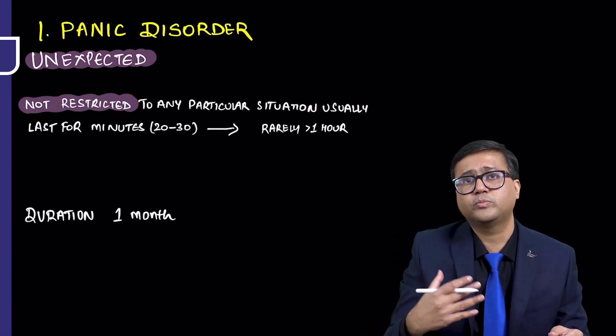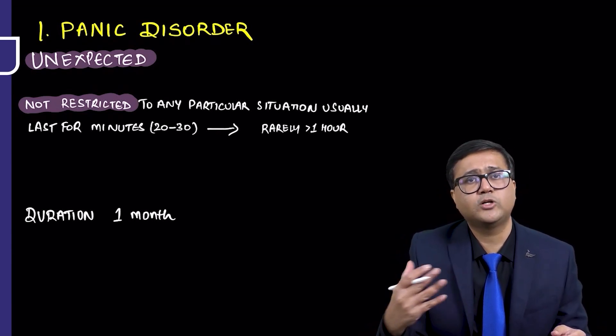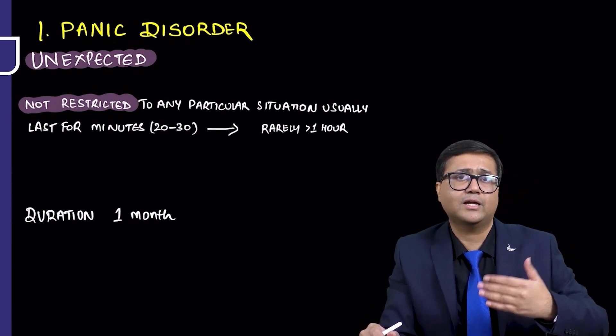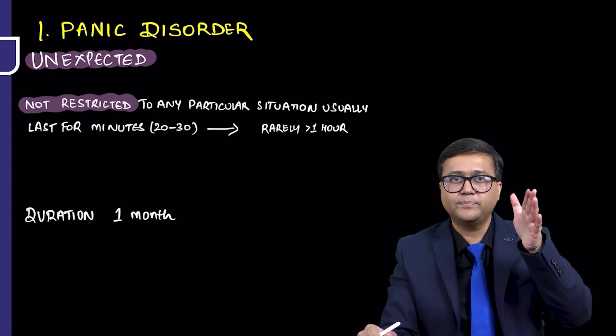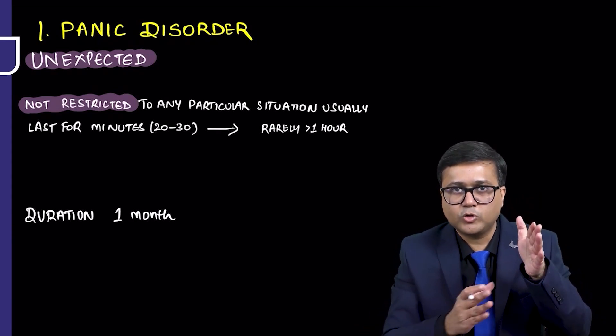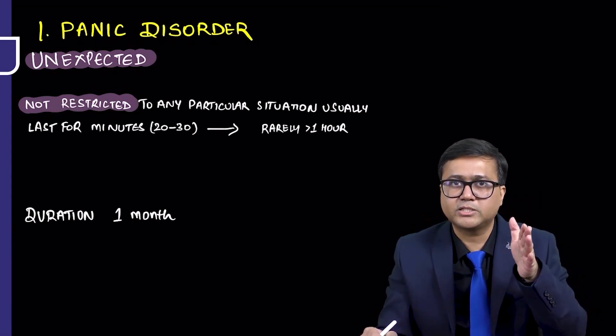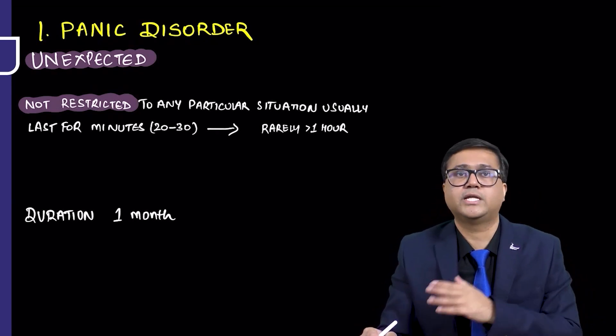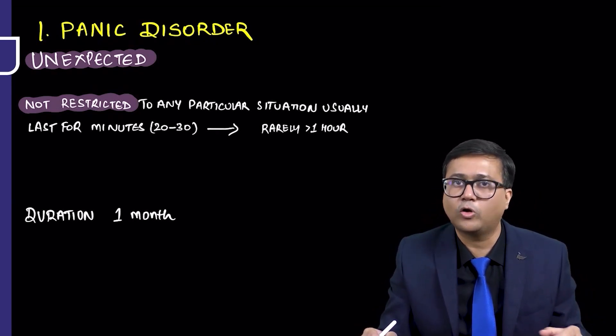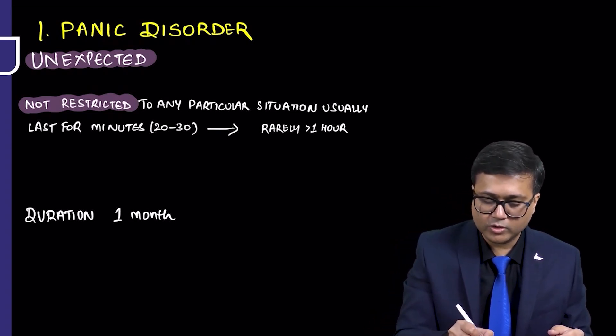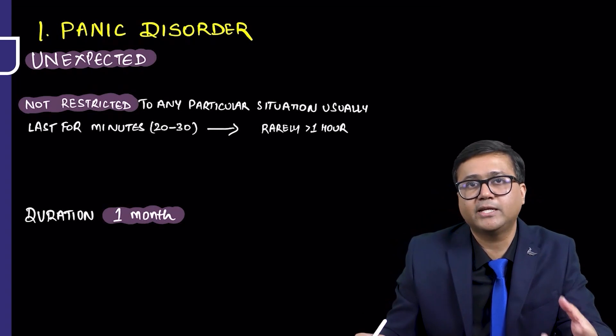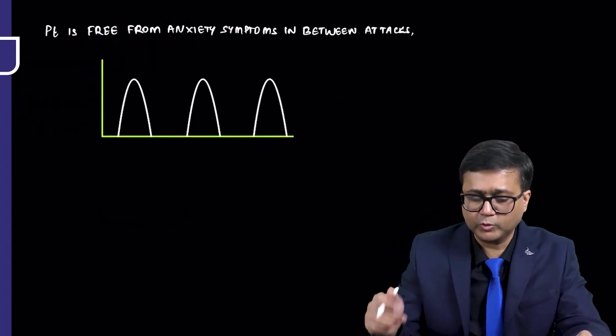They could occur anytime. Generally, they last for a few minutes, maybe 20 to 30 minutes. Rarely, they may last even more than one hour. There is sudden onset of anxiety which may peak in around 10 minutes, and then the anxiety would decrease and the person may become alright. These panic attacks occurring more than one month, we say, patient has panic disorder.